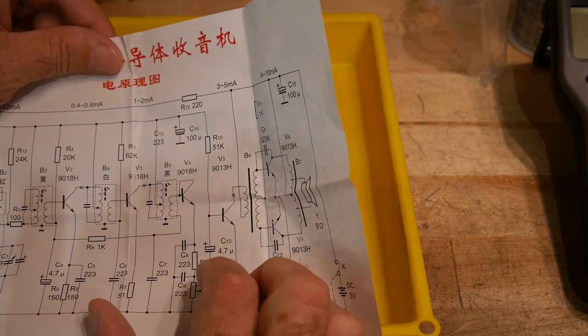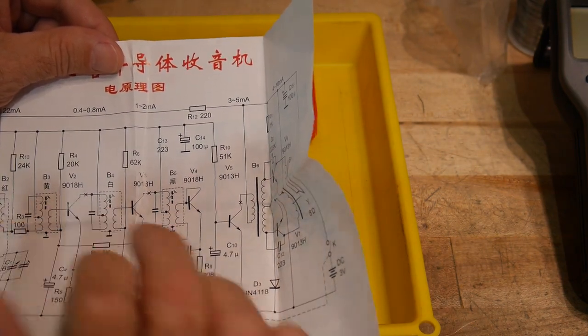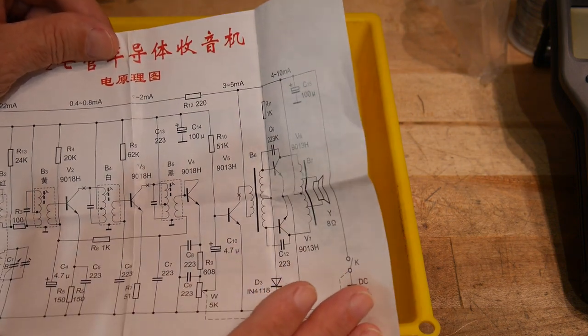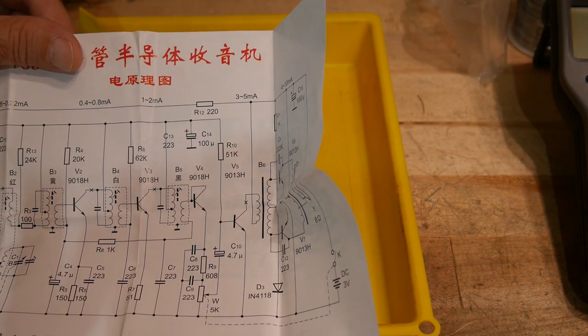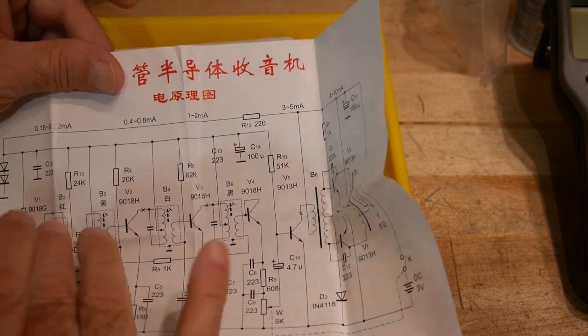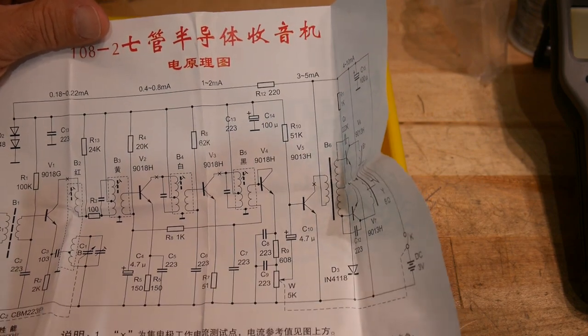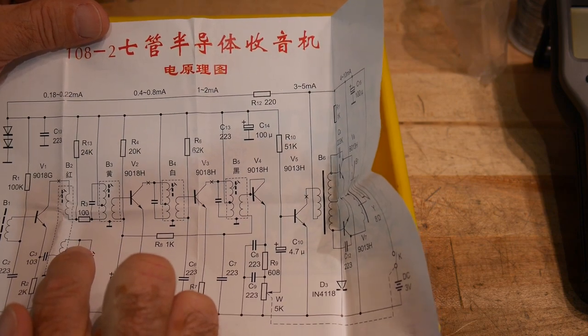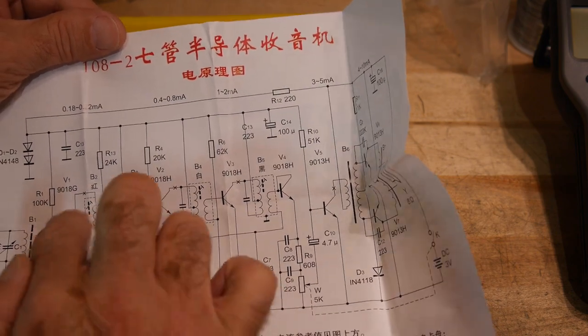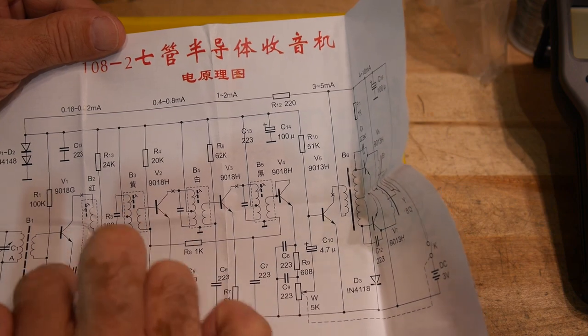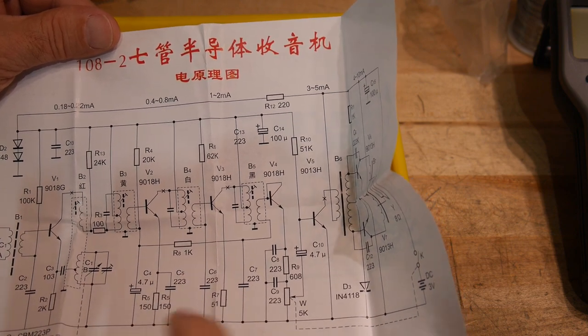Then we have IF cans, one, two, three, four, maybe IF cans, five maybe. So one of these is probably an IF filter detector amplifier, preamplifier. Then there has to be an oscillator. This is probably the oscillator here. So this is probably the oscillator transistor here.